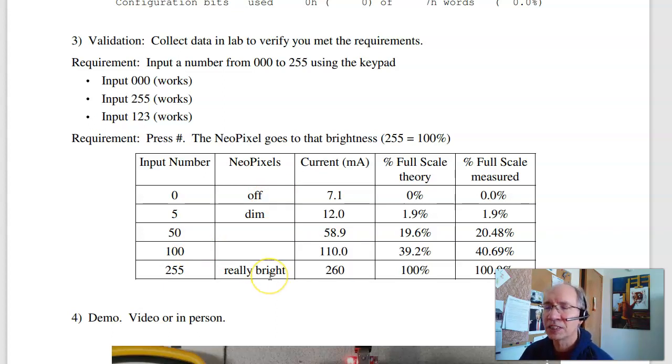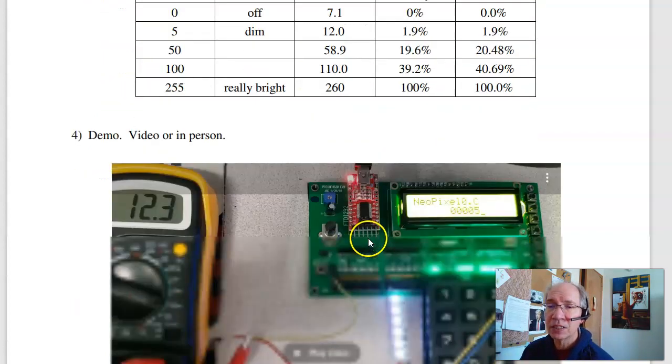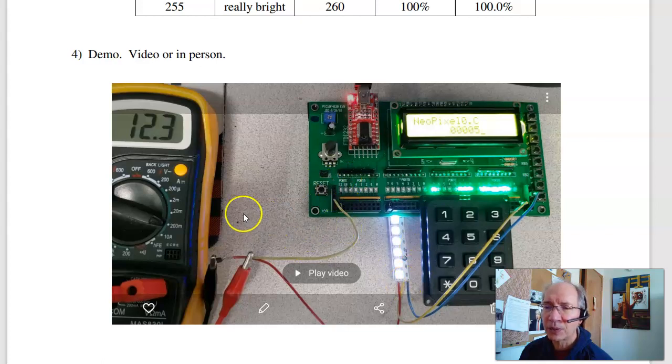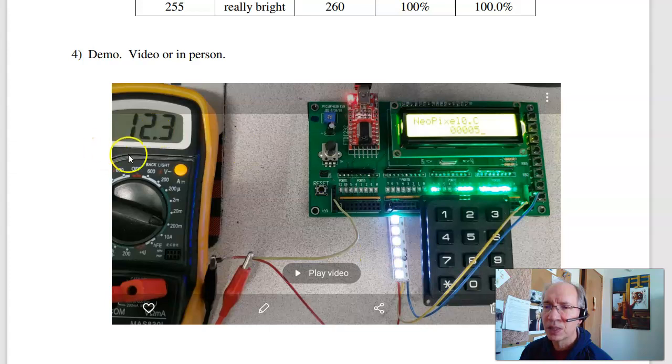Another way to check that is I could use an ammeter. Measure the current drawn by the NeoPixel. And that's kind of what I did here. I've got the NeoPixel. The power goes to my ammeter to the NeoPixel. So I can measure the current draw.